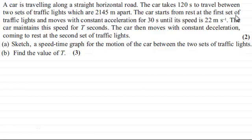The car starts from rest at the first set of traffic lights and moves with constant acceleration for 30 seconds until its speed is 22 meters per second. The car maintains this speed for t seconds, then moves with constant deceleration, coming to rest at the second set of traffic lights.